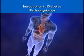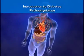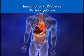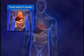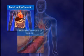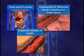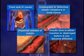Diabetes mellitus is a disorder characterized by an imbalance between insulin production, insulin need, and the body's ability to use the available insulin. This imbalance can result from a total lack of insulin, from impaired release of insulin by the beta cells of the pancreas, from inadequate or defective insulin receptors in body tissues, or from the production of insulin that is either ineffective or destroyed before it can become effective.